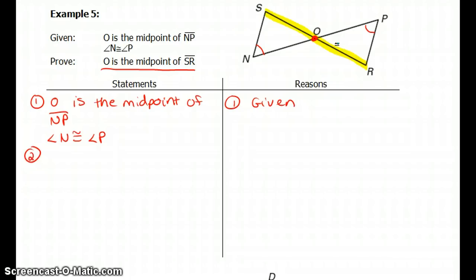So first you want to think about what your goal is going to be. Before you prove that O is the midpoint of SR, what has to be true? How would we know that O is right smack in the middle of SR? We would know that if SO is congruent to, what do you guys think? That's right, OR.